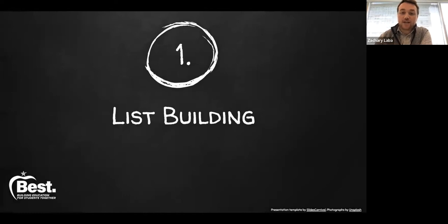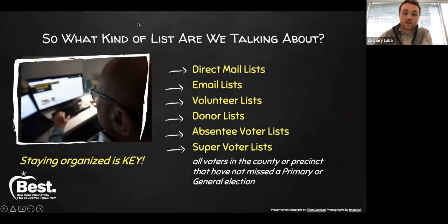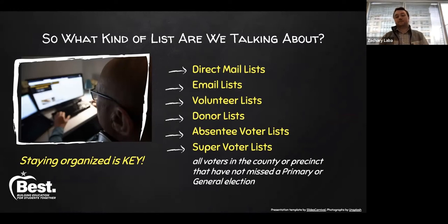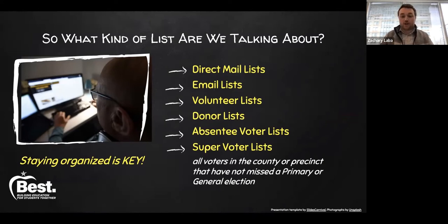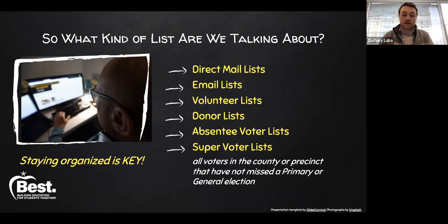The first portion of that is list building. What kind of lists are we talking about? We're talking about direct mail lists, email lists, volunteer lists, donor lists, absentee voter lists, and super voter lists. The most important of these for any grassroots campaign is your absentee voter, super voter, and your general voter lists. The others are highly recommended if you are pursuing email or direct mail campaign strategies, or if you have enough volunteers and donors to keep them organized using lists.